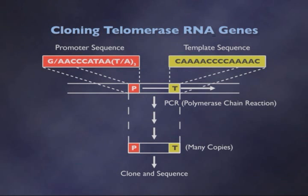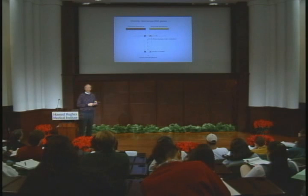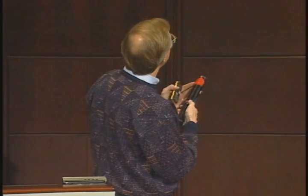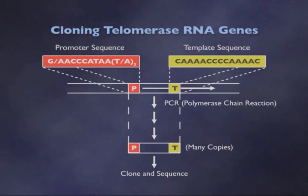There was no other part of the telomerase RNA itself that we felt we could predict the sequence of. However, right to the left, or upstream of the start of the gene, there has to be some kind of a block of nucleotides in the DNA that tell RNA polymerase to sit down there and make RNA in the direction shown by the arrow. That's called a promoter sequence. Based on the sequences of other promoters in ciliated protozoa, we were able to make a guess as to what that promoter sequence would be.